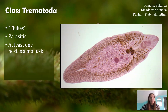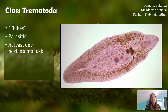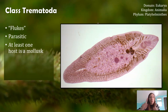Most mollusks are found in the water, though there are some that are on land as well. Some of these trematodes might have multiple hosts, completing part of their life cycle in one organism and part in another. For these, just one of those two hosts will be a mollusk, not necessarily both of them.